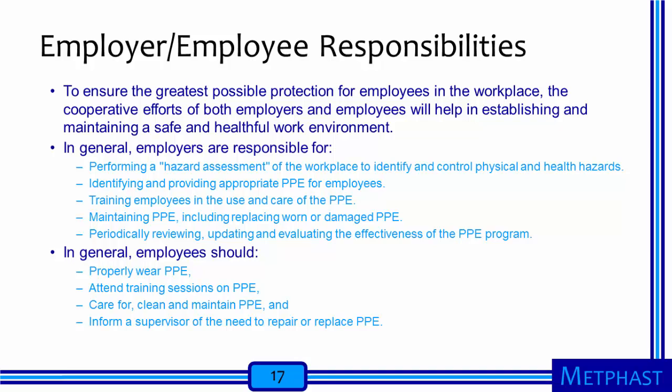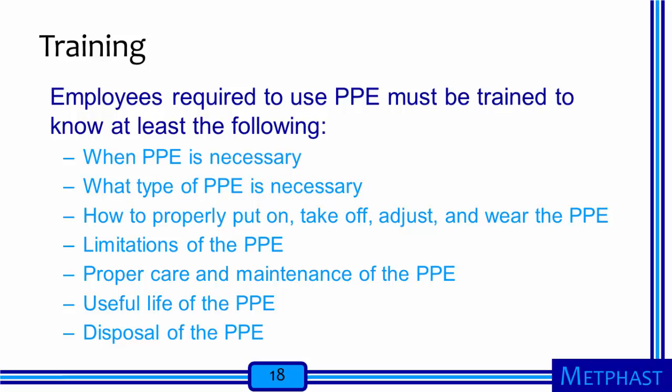Employees are responsible for wearing their PPE properly, attending training sessions on PPE, following directions for caring, cleaning, and maintaining their PPE, and informing a supervisor when their PPE needs repair. Employees who are required to use PPE must be trained to know at least the following: when the PPE is necessary, what type of PPE is necessary, how to properly put on, take off, adjust, and wear their PPE, the limitations of the PPE, the proper care and maintenance of their PPE, the useful life of their PPE, and how to dispose of their PPE at the end of its useful life.